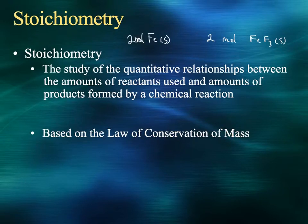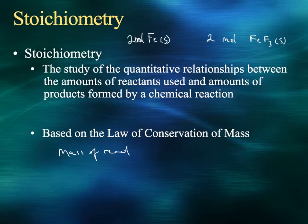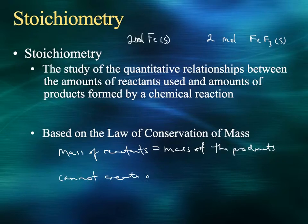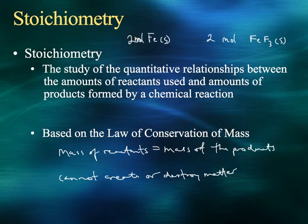The law of conservation of mass states that the mass of the reactants must equal the mass of the products. You don't gain or lose mass — you cannot create or destroy matter. Mass has to remain constant, and that's what all these coefficients up front are helping us with. It's going to maintain constant mass — that's why we balanced all those equations.